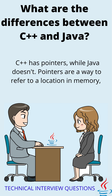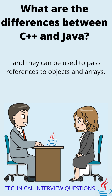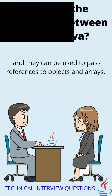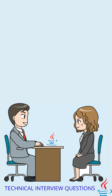The fourth difference is that C has pointers, while Java doesn't. Pointers are a way to refer to a location in memory, and they can be used to pass references to objects and arrays. Java doesn't have pointers; instead it uses references.